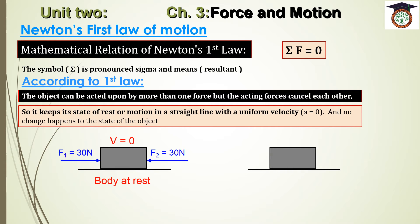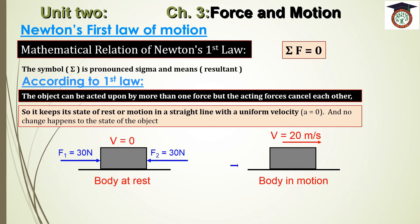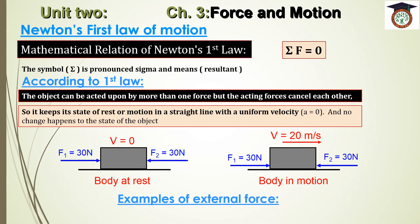Here we have another example: if an object is moving with uniform velocity of 20 meters per second, and two forces act on it — 30 N from the left and 30 N from the right — the two forces are equal in magnitude but opposite in direction. They cancel the effect of each other and the object keeps its motion at uniform velocity.